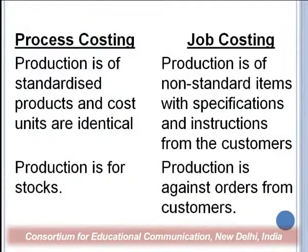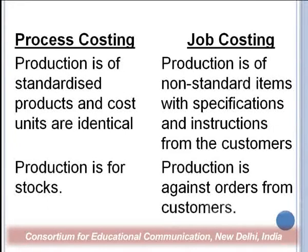In process costing, production is of standardized product and cost units are identical. For example, in the sugar industry, each kilogram of sugar produced is identical and you calculate the cost per kg. In job costing, production is of non-standardized items — meaning as per the customer order, with specifications and instructions from the customer. Each customer has its own requirements and the job is done accordingly.